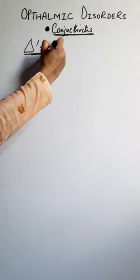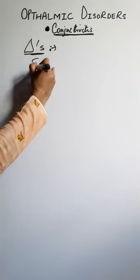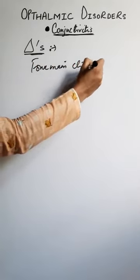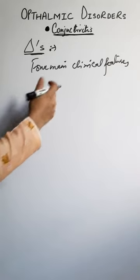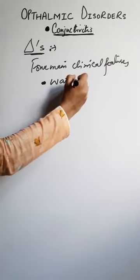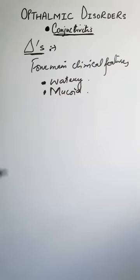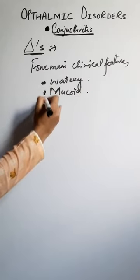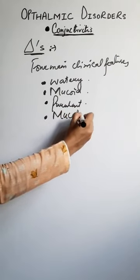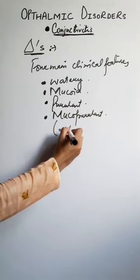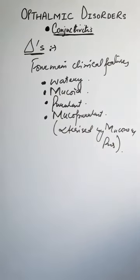Here we mainly look at the type of discharge. Based on four main clinical features, the types of discharge are: number one, watery — if watery discharge comes from the eyes; next is mucoid, which resembles mucus-like fluid discharge; next is purulent, consisting of pus; and next is muco-purulent.